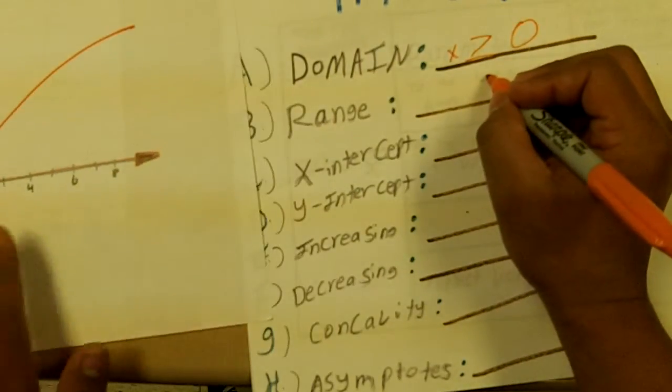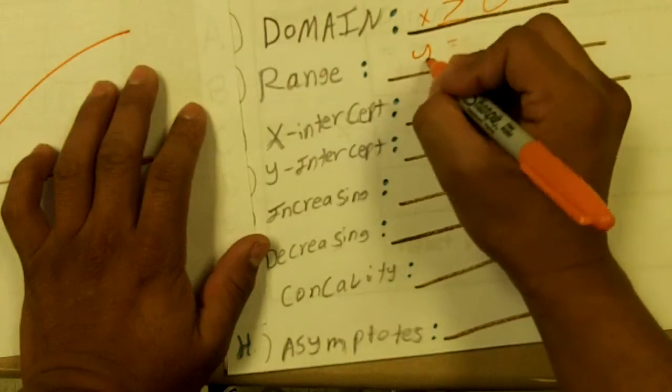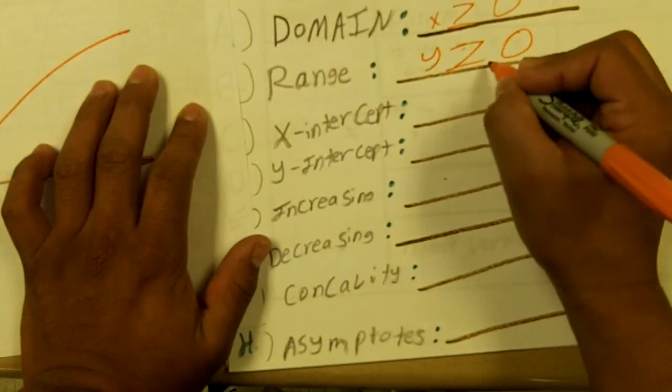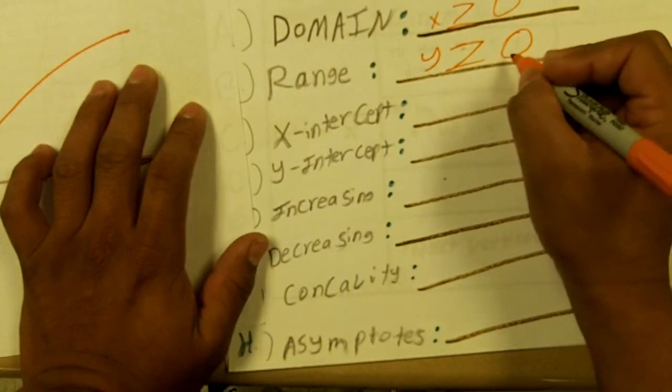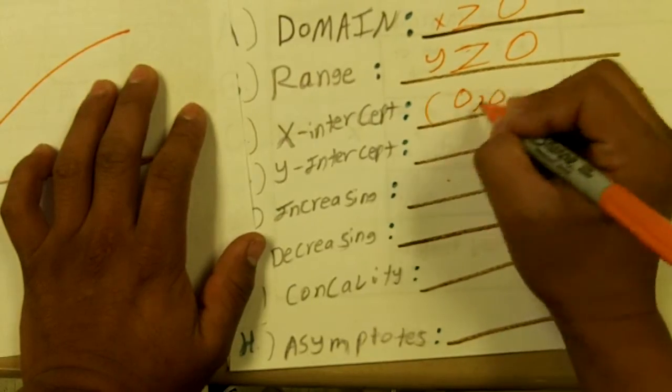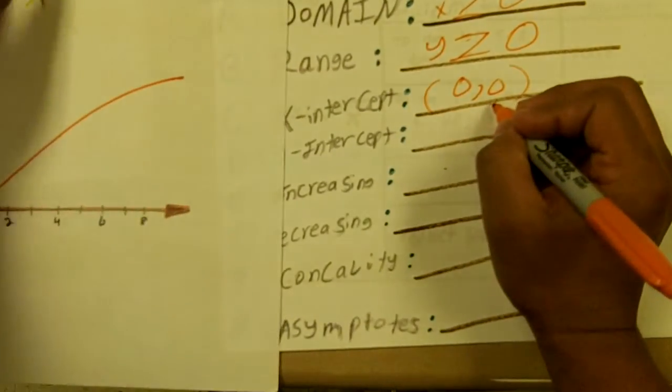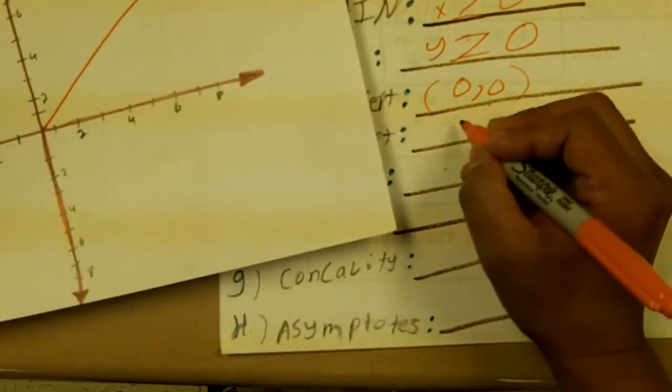And for the range, y is also greater than or equal to zero. And then for the x intercept, it is going through zero and zero as well as the y, as you can see.